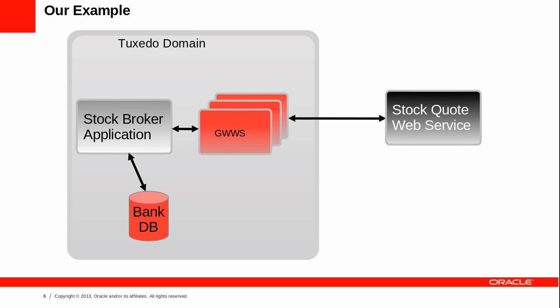This is an example of calling a web service from a Tuxedo application. In a stock broker application, we need to use a cash account to buy or sell stock. This is implemented directly using a Tuxedo application. Then, to either check stock prices or make purchases or sales, this application will need to consult live stock prices online by accessing a stock quote provider web service — and this is where the Salt gateway comes in.